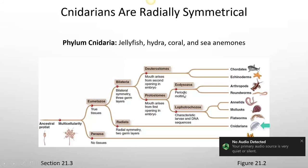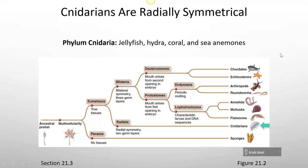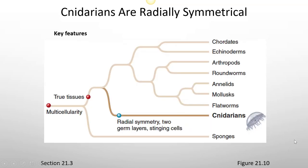The phylum Cnidaria includes jellyfish, hydra, coral, and sea anemones. Here you can see the radial symmetry, and they have two germ layers. They also have stinging cells.